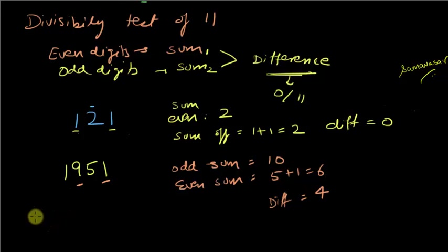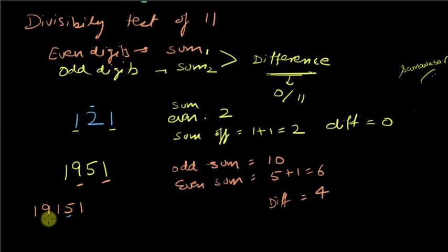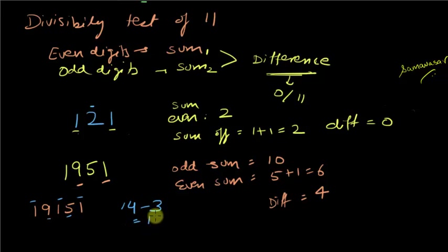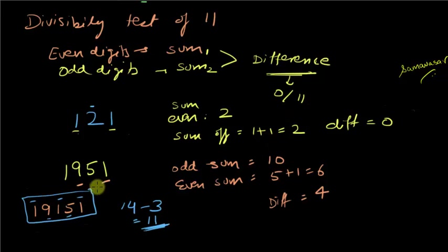Let me tweak this number a little. Let's say the number is 19151. In this case, the sum of the even-position digits is 9 + 5 = 14, and the sum of the odd-position digits is 1 + 1 + 1 = 3. Since 14 − 3 = 11, and 11 satisfies the condition of being 0 or 11, the number 19151 is divisible by 11.